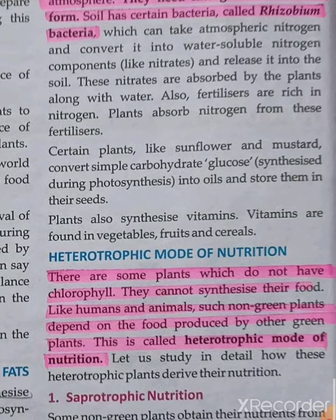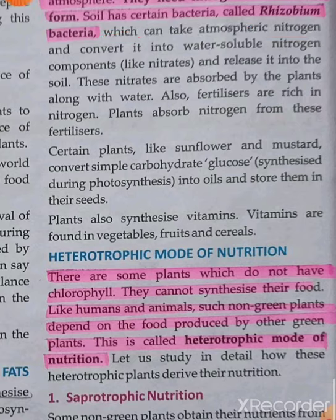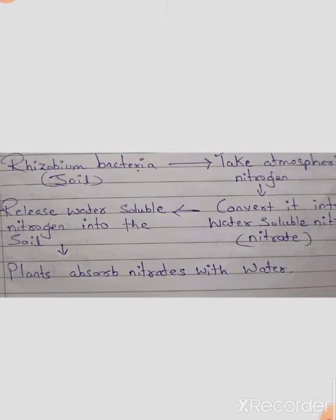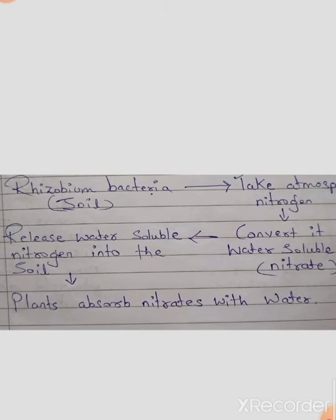Plants need nitrogen in a soluble form. The soil has certain bacteria called rhizobium bacteria. I have made a flowchart to explain this. In the first point of the flowchart, you can see that rhizobium bacteria is present in the soil.